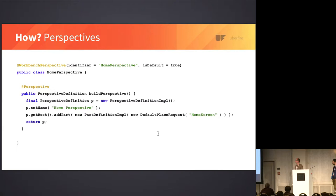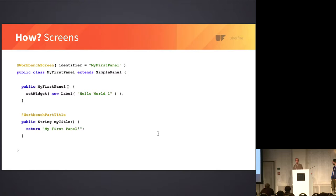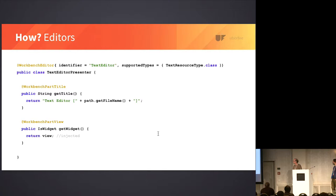Here's a screen — it extends SimplePanel. All we need to do is annotate it with @WorkbenchScreen, an identifier, and a title. We don't need the view because it extends IsWidget. Here's an editor — much the same, quite consistent. It has an identifier and supported file types, which is different from screens. This allows the workbench to automatically launch the correct editor for different files in the virtual file system. In this case, since it doesn't extend IsWidget, we have to provide an annotated @WorkbenchPartView method.